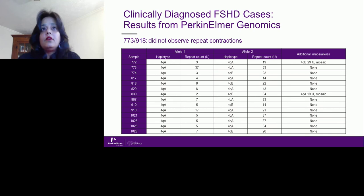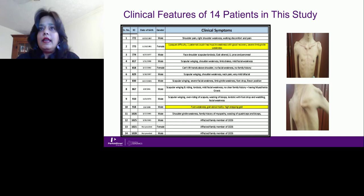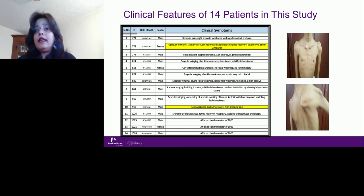When the same samples were run at our PerkinElmer Genomics site, we saw exactly the same result — 773 and 918 did not show repeat contractions, and we observed the same mosaicism. For samples 773 and 918: 773 also had severe limb-girdle muscular dystrophy, suggesting phenotypic heterogeneity. Sample 918 showed foot weakness and gait abnormality but not the classic scapular winging or other classic FSHD features, and we did not observe repeat contractions in these two patients.